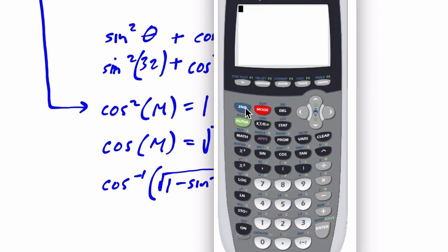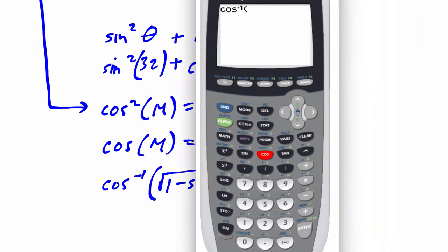Now what I'm going to do is do the inverse cosine. And I'm just going to enter this expression, right? Square root of, so second square root of 1 minus.